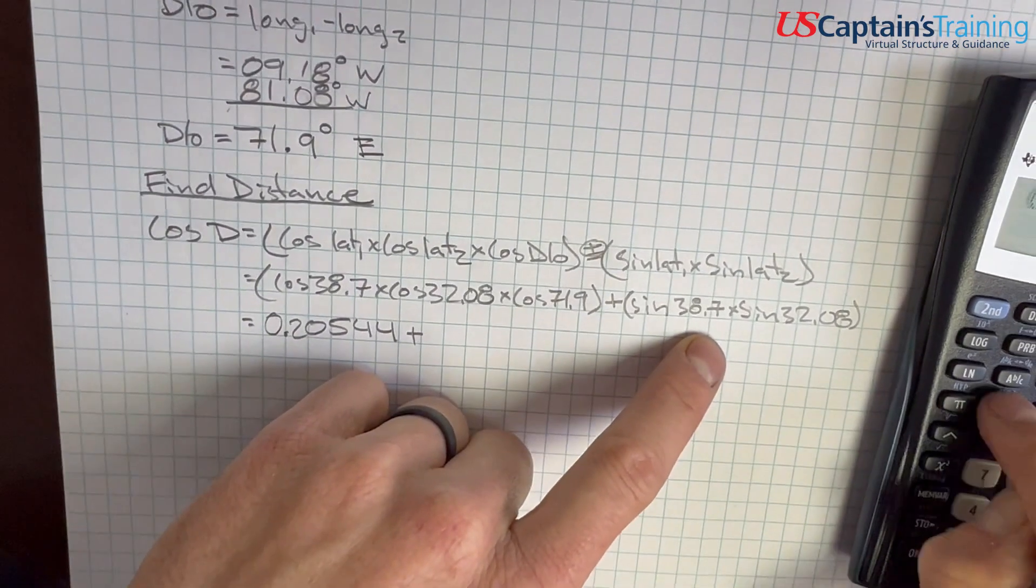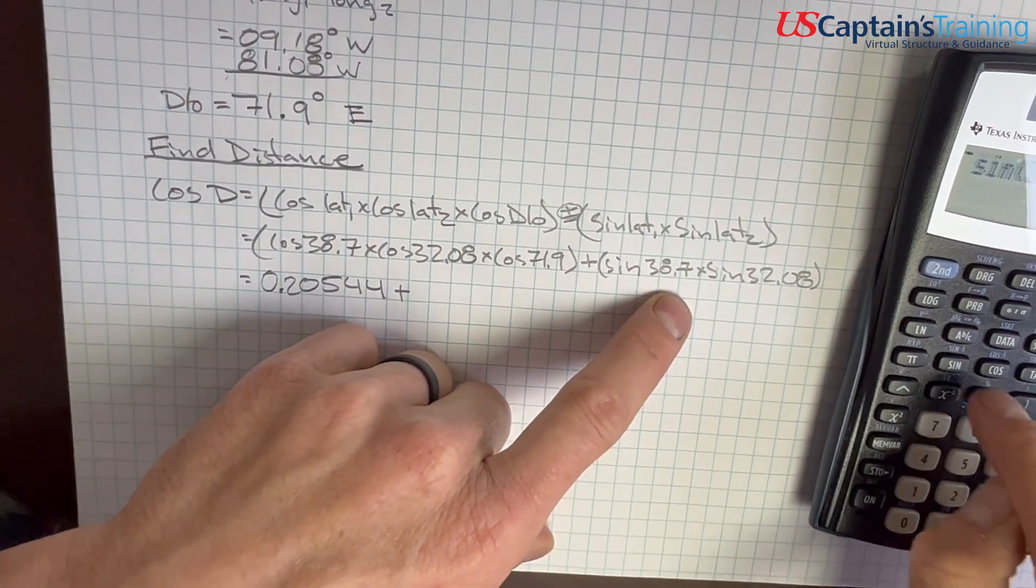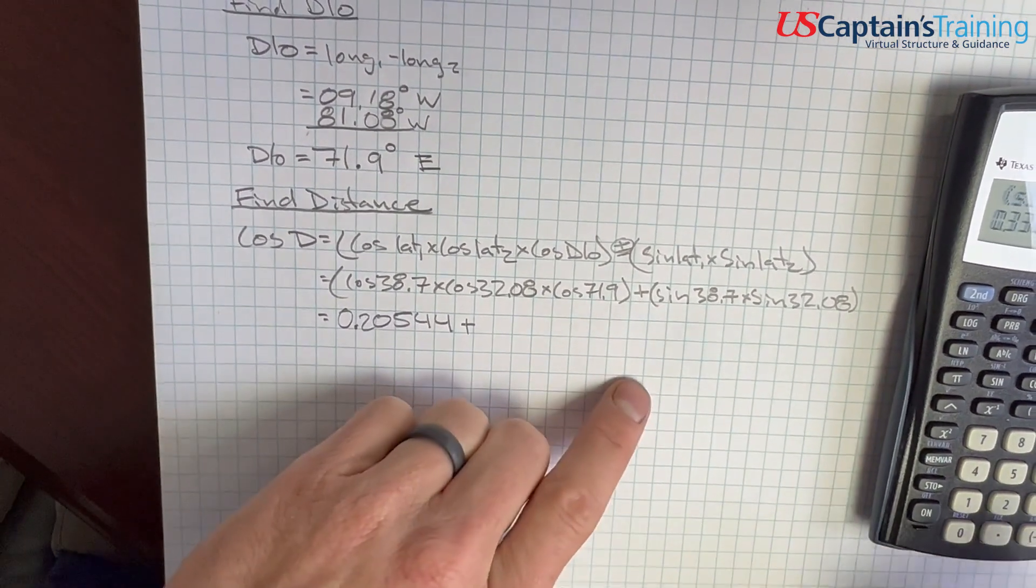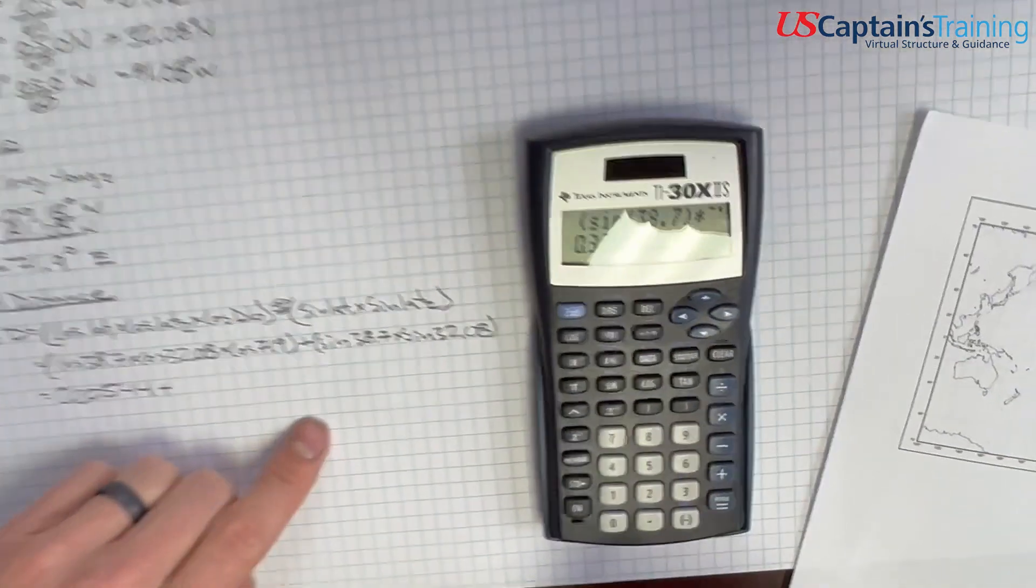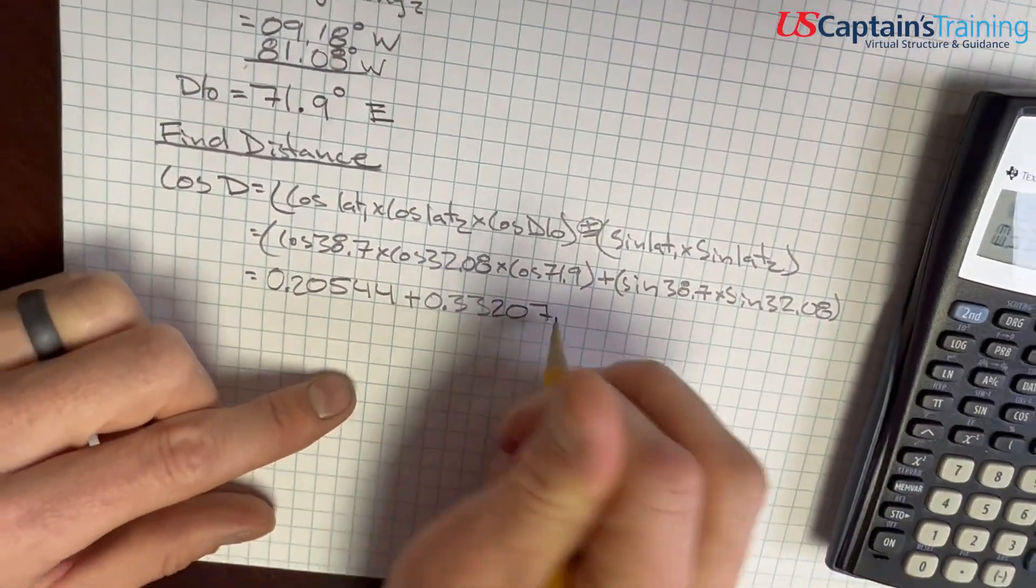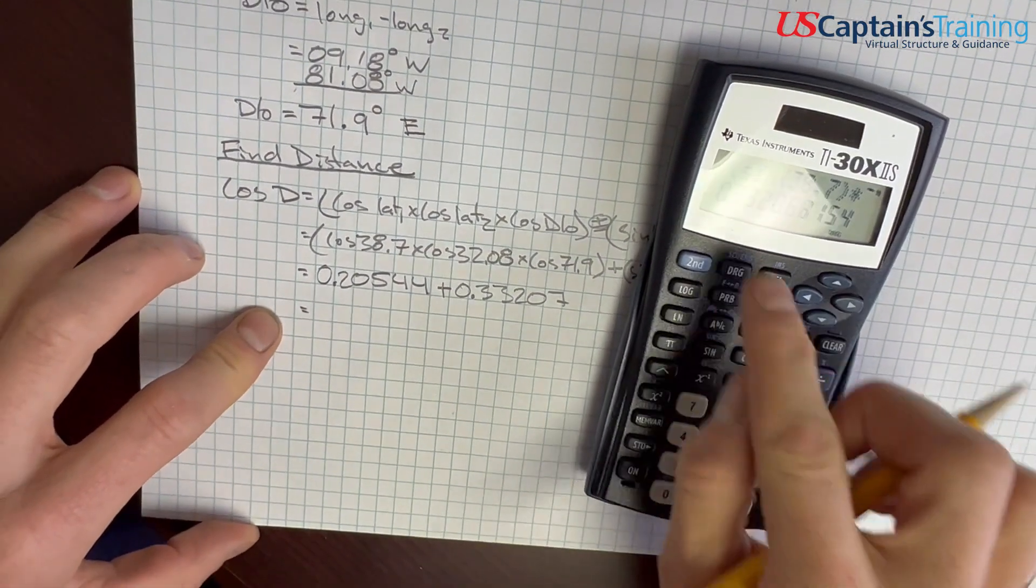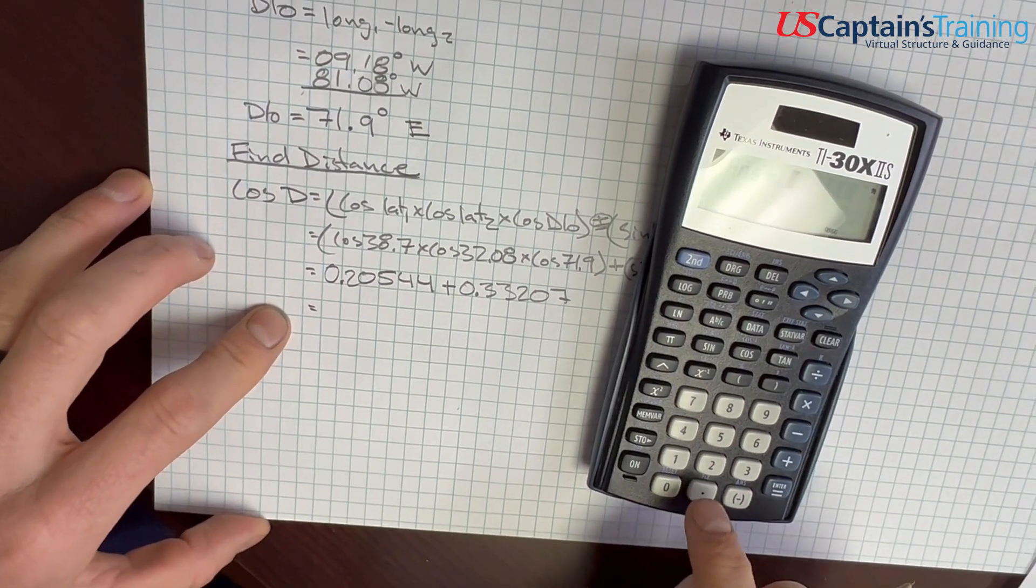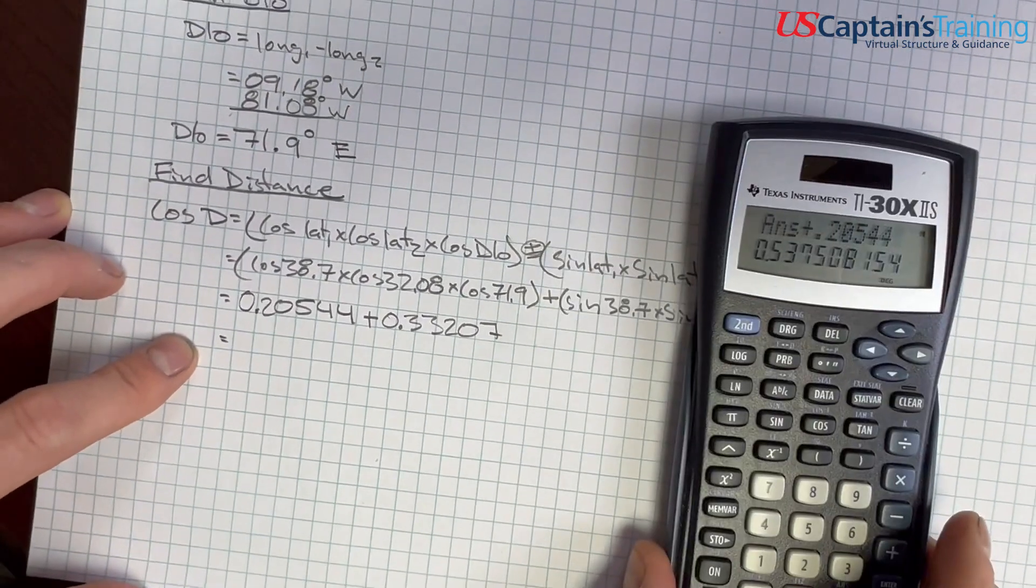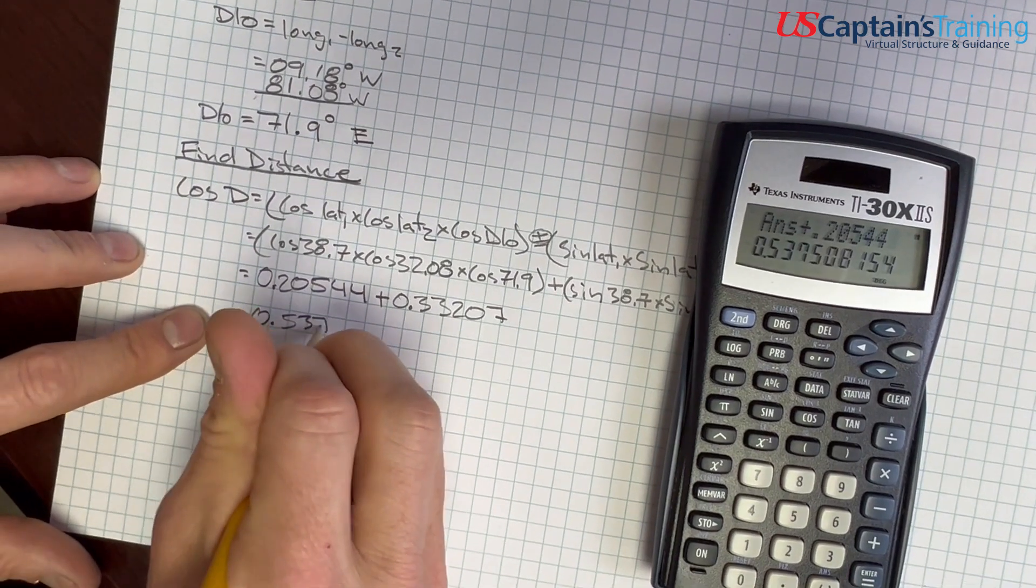Plus, and we'll do these. Open those parentheses and sine 38.7 times sine 32.08, close, close, enter, 0.33207. Let's do this addition, so we have that number plus our 0.20544, enter, 0.53751.